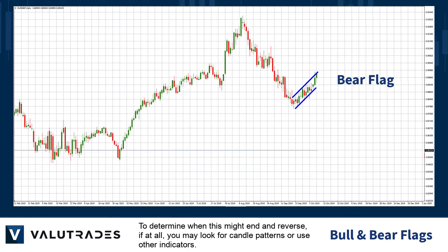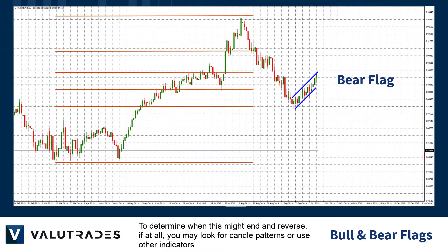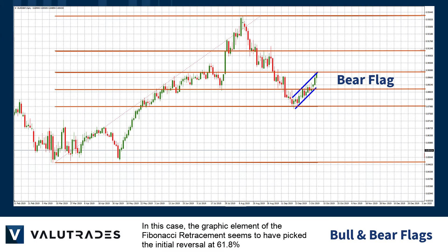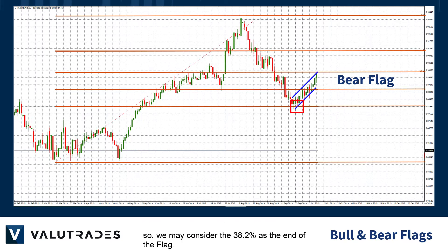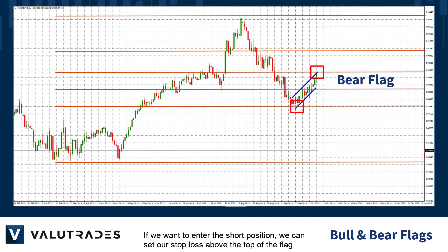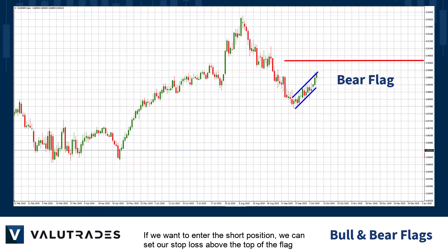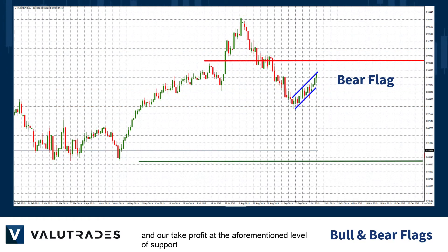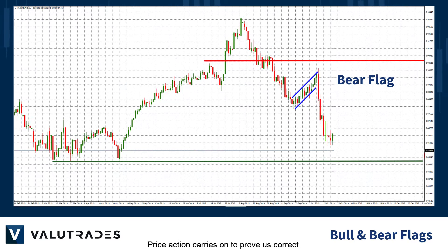To determine when this might end and reverse, if at all, you may look for candle patterns or use other indicators. In this case, the Fibonacci retracement seems to have picked the initial reversal at 61.8 percent, so we may consider the 38.2 percent as the end of the flag. If we want to enter the short position, we can set our stop loss above the top of the flag and our take profit at the aforementioned level of support.